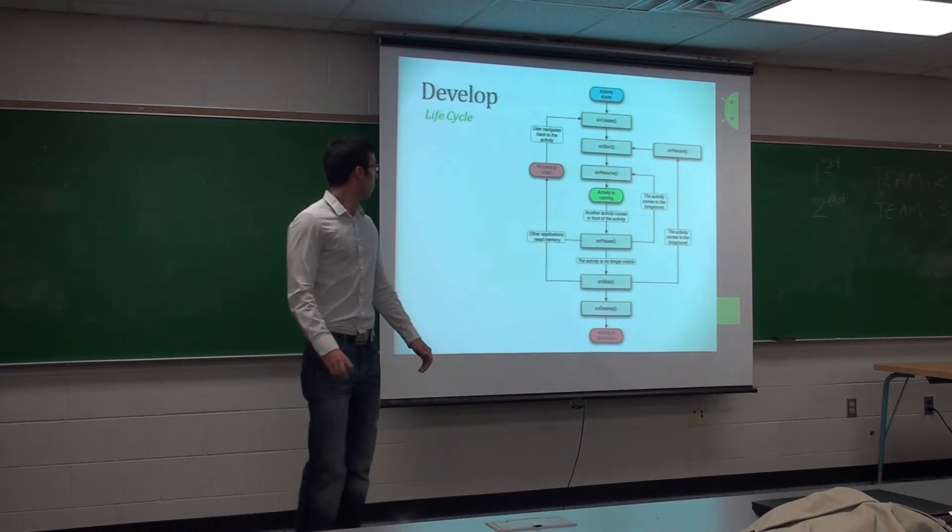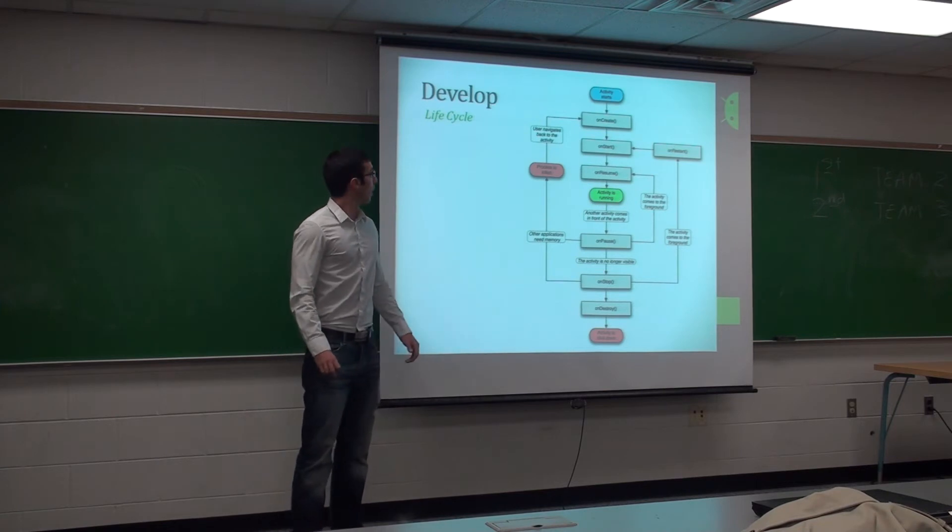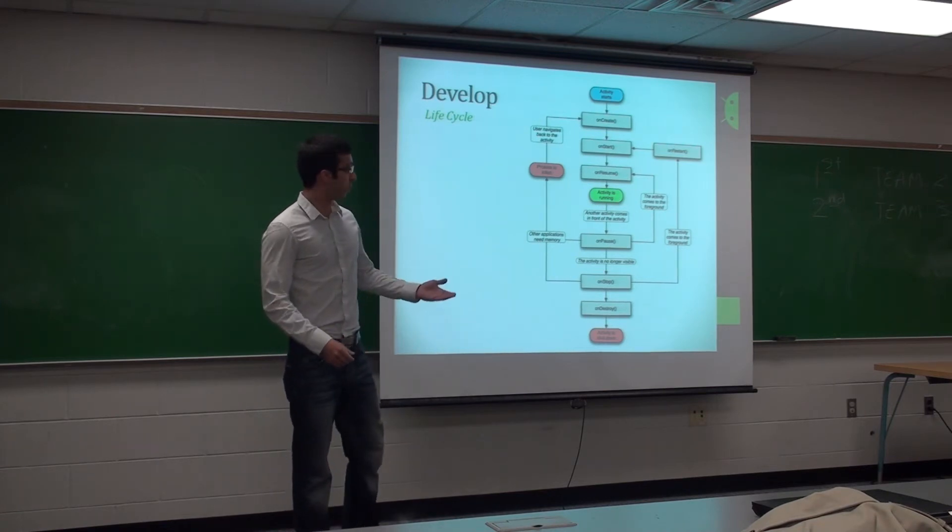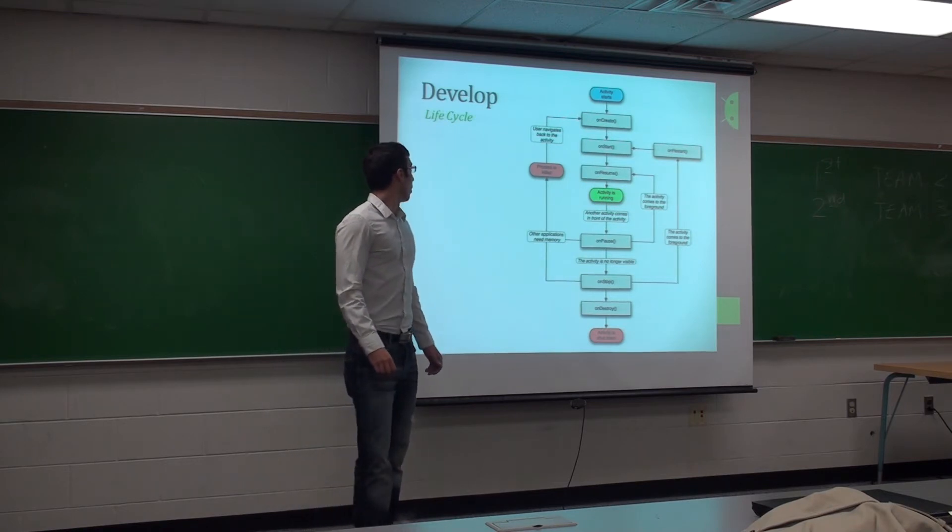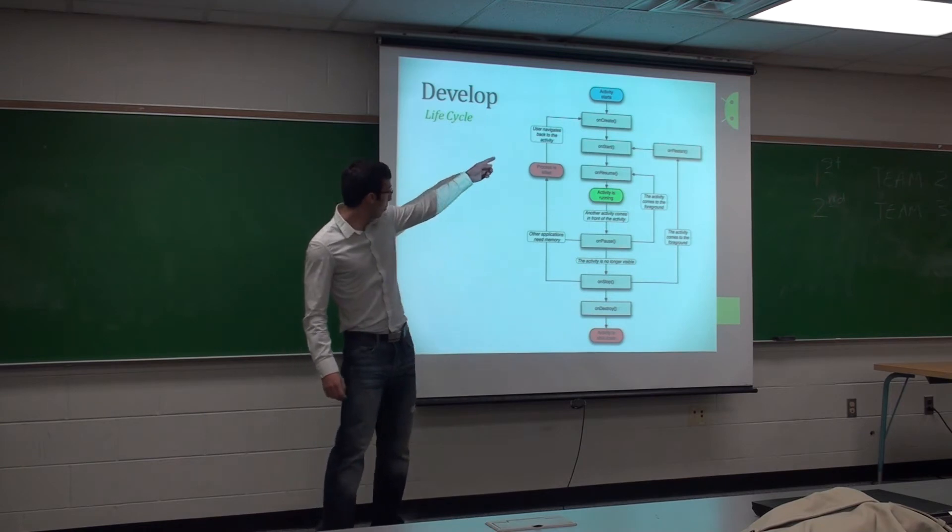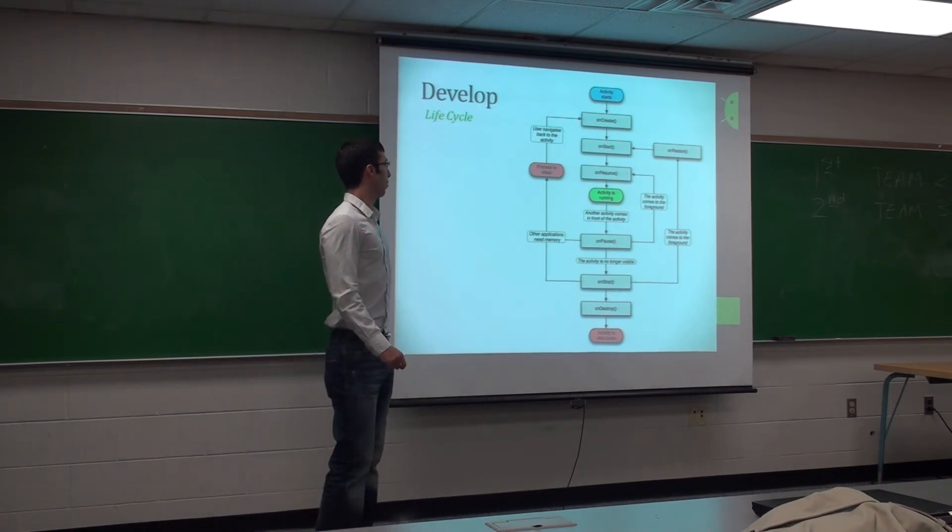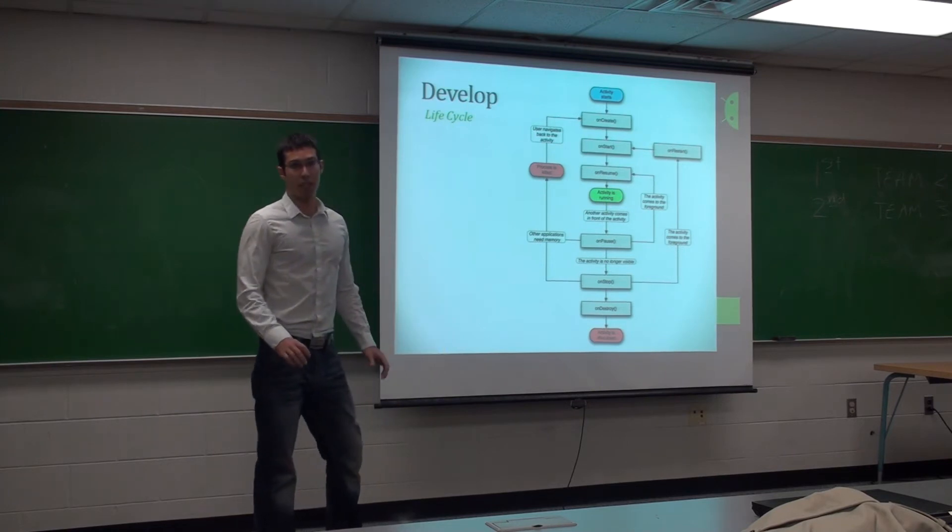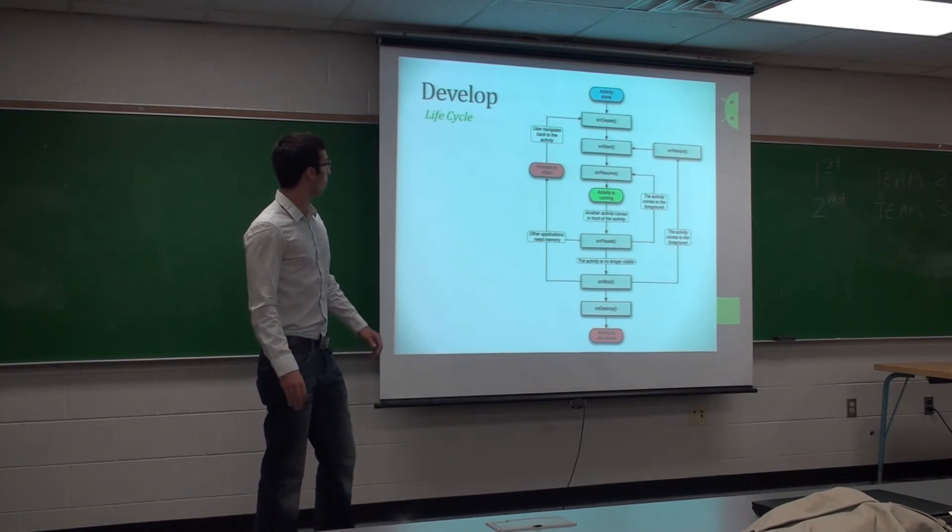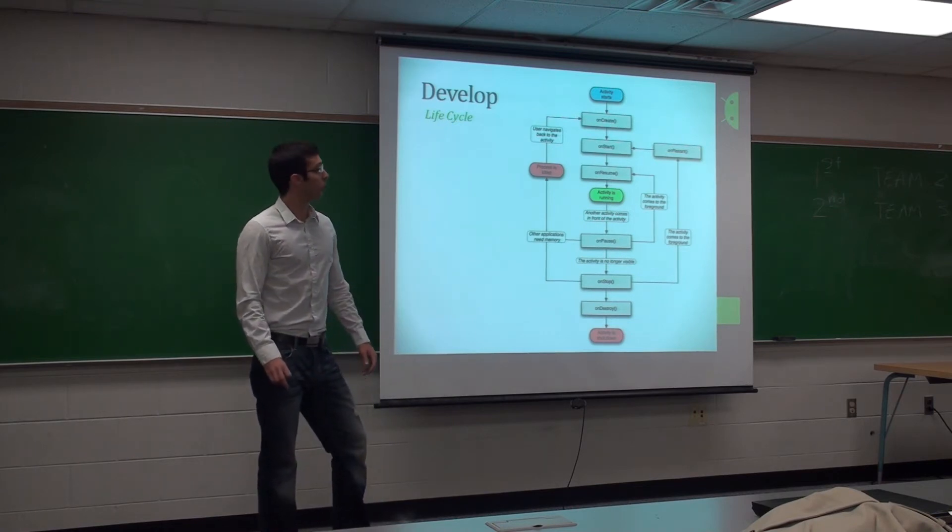When you run an app, it goes through this kind of state graph here. So whenever you click on it, the activity starts. Your app starts off as an activity. It's what it's run as. It starts onCreate. That's the first function that's run. It starts here at the top. And basically here is where you're going to want to create all your variables, anything that's static, anything that needs to be ready for the app to run.